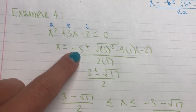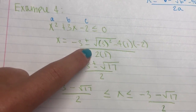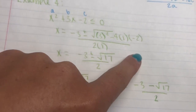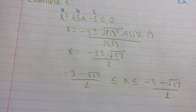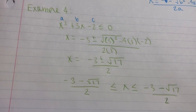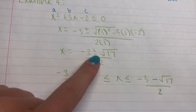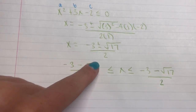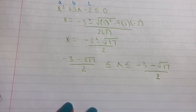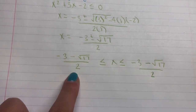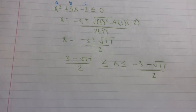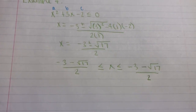Substituting our values — negative b is negative 3, and since there is no coefficient in front of x², a = 1 — we get x = (−3 ± √(9 − 4·1·(−2))) / 2 = (−3 ± √17) / 2. This gives us the final answer: x ≤ (−3 − √17)/2 or x ≥ (−3 + √17)/2, a closed interval.